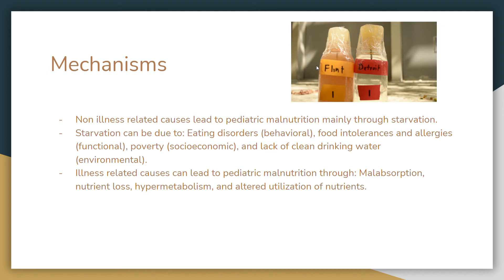There's also poverty, which is a socioeconomic factor, and lack of clean drinking water, which is environmental. For example, in Flint, Michigan, there has been terribly contaminated drinking water — as you can see in the picture, the drinking water even turned orange. This could cause starvation if you're unable to drink enough water and can't afford or don't have access to bottled water, unlike Detroit which has clean water.